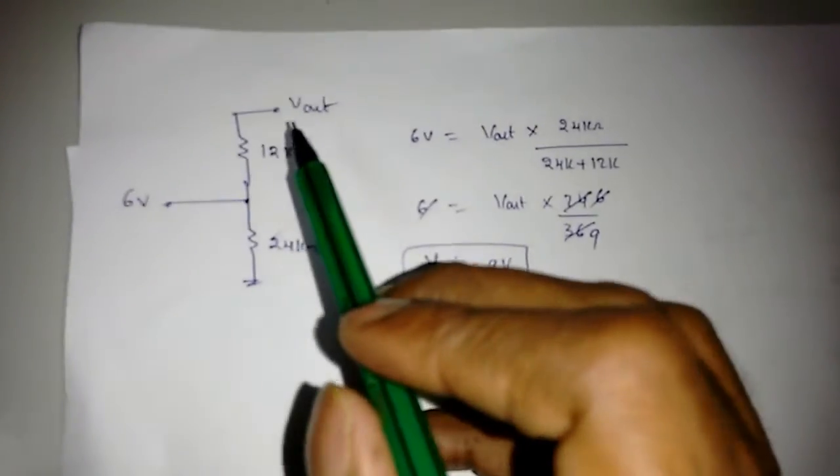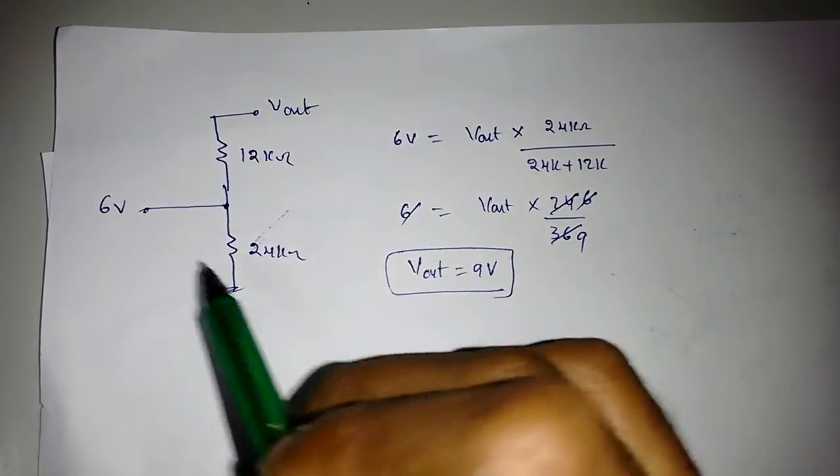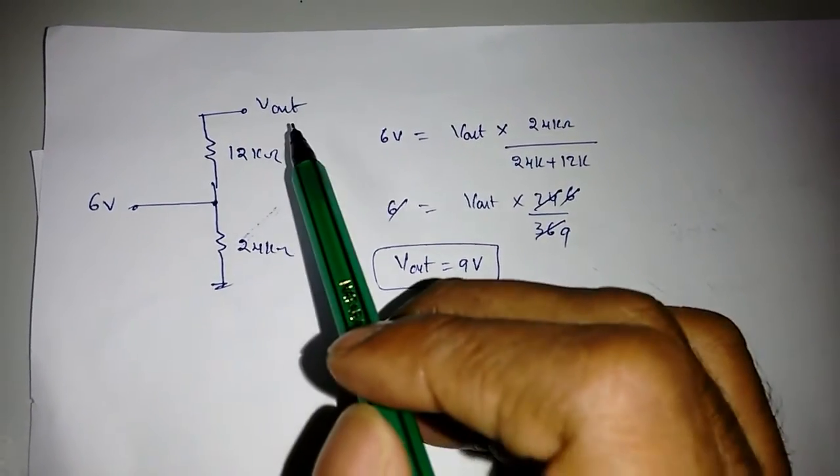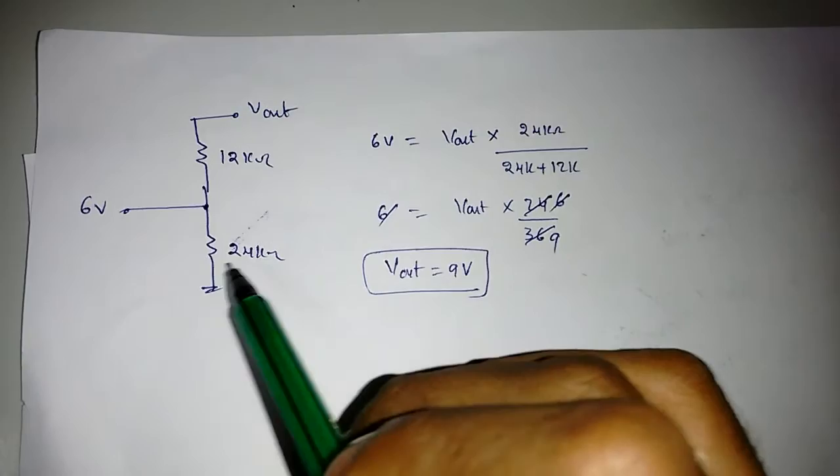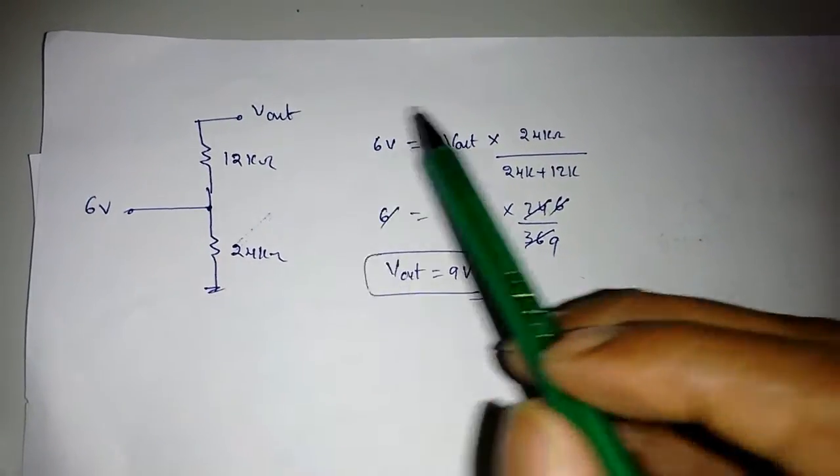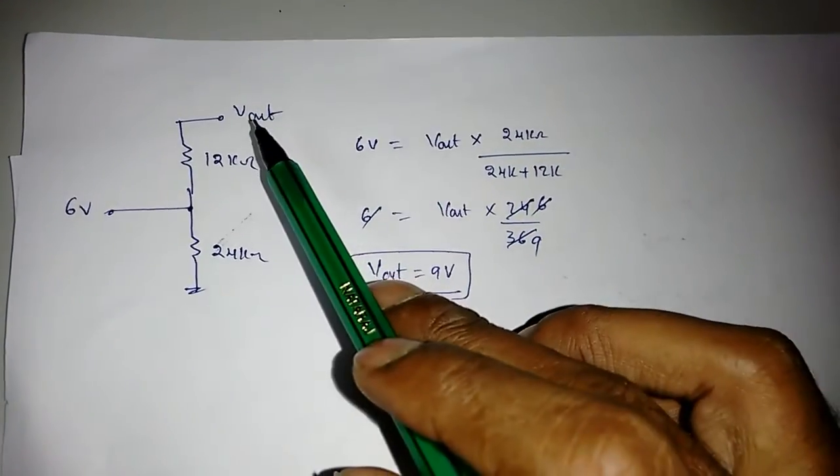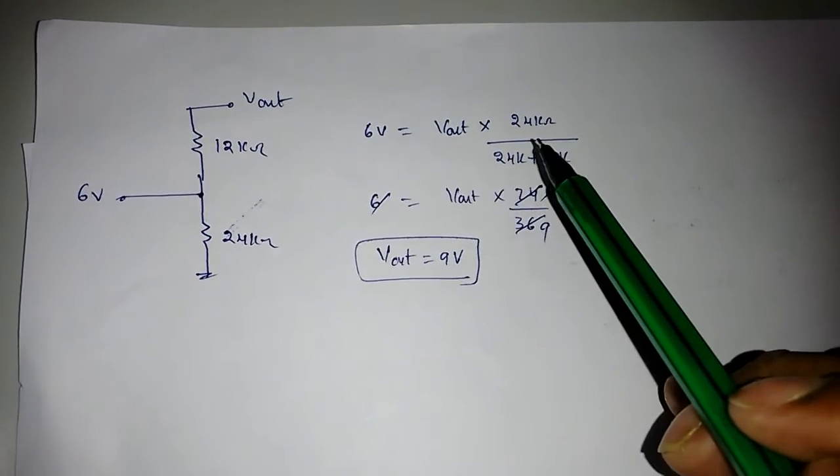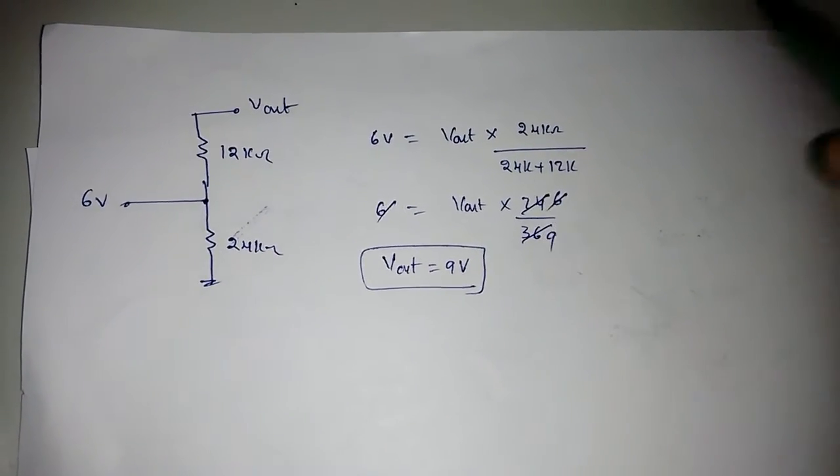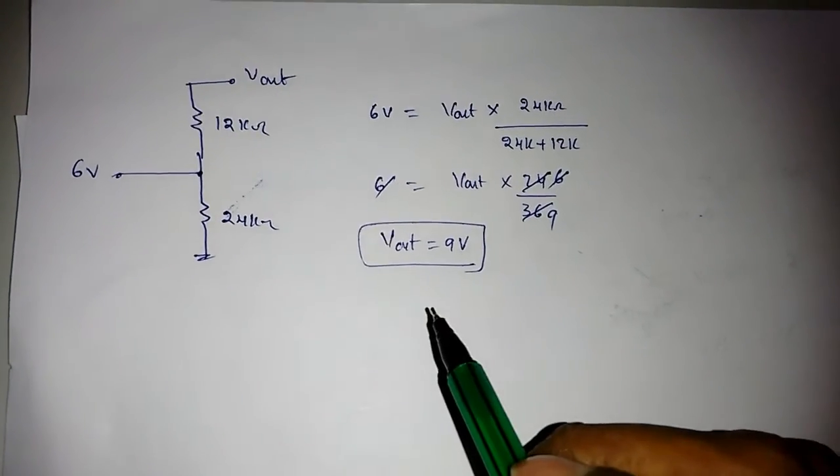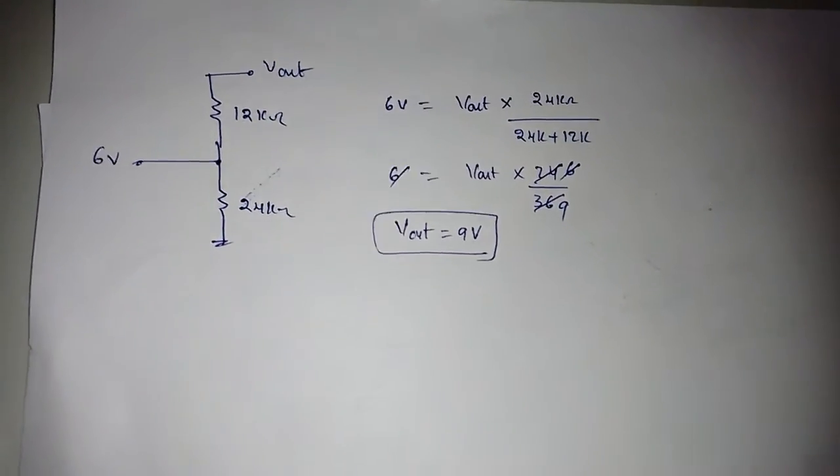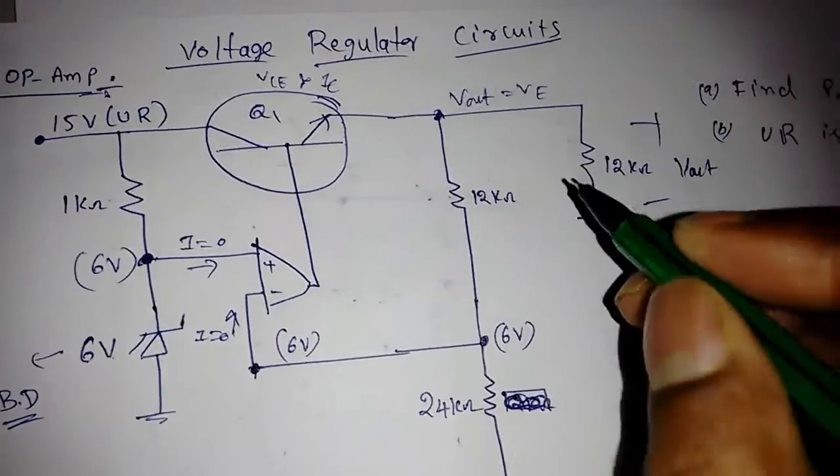It looks like this: Vout, 12 kilo ohm, 24 kilo ohm, 6 volts. Now I can find Vout easily by voltage division. I know across this 24 kilo ohm is 6 volts, so I can apply like this: 6 volts equals Vout times 24k divided by 24 plus 12k. So Vout is found to be 9 volts.